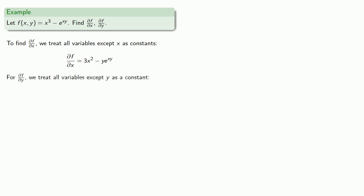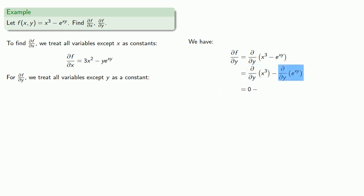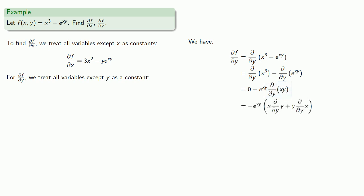Similarly, to find the partial derivative of f with respect to y, we treat all variables except y as constants. The derivative of x³ — since we're differentiating with respect to y and x is a constant — gives zero. For the e to the xy term, that's the derivative of e to the xy times the derivative of the exponent. Since xy is a product, we apply the product rule. The derivative of y with respect to y is 1, and since x is a constant, its derivative is 0. We can clean up and get our final answer.